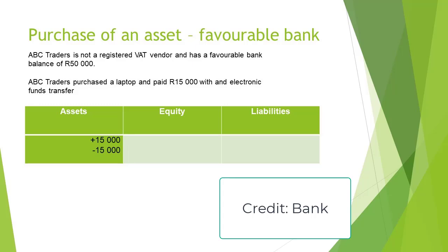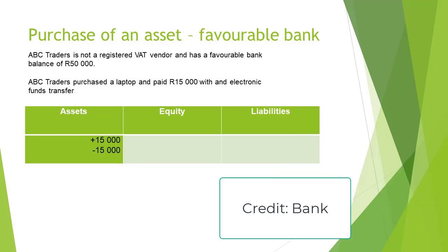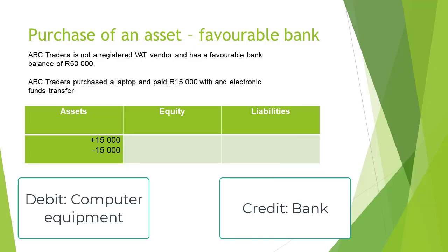On the other hand, a favourable bank is also an asset. The money we paid flowed out of the account. Therefore, the bank account will decrease and assets will have a minus 15,000 Rand on the accounting equation.